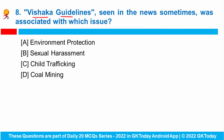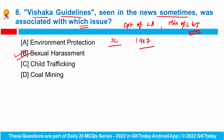Question number eight: the Vishakha guidelines seen in the news were associated with which issue? The Vishakha guidelines were passed by the Supreme Court of India in the Vishakha and others v. State of Rajasthan case in 1997 regarding sexual harassment at the workplace. Recently, the first workshop on prevention of sexual harassment at the workplace was held under the aegis of the Department of Legal Affairs, Ministry of Law and Justice. Sexual harassment at the workplace is a violation of fundamental rights under Articles 14 and 21 of the Indian Constitution.